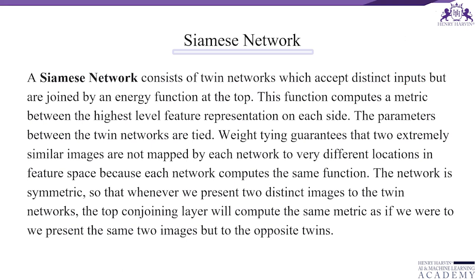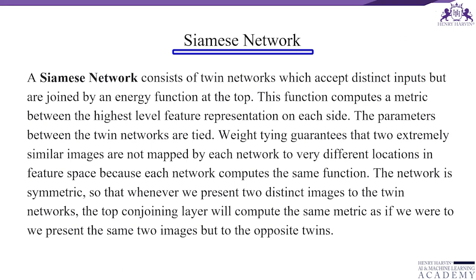This is where the application of the Siamese network applies. It consists of twin networks which accept distinct inputs but are joined by an energy function at the top. This function computes a metric between the highest level feature representation on each side. The parameters between the twin networks are tied. Weight tying guarantees that two extremely similar images are not mapped by each network to very different locations in feature space, because each network computes the same function.